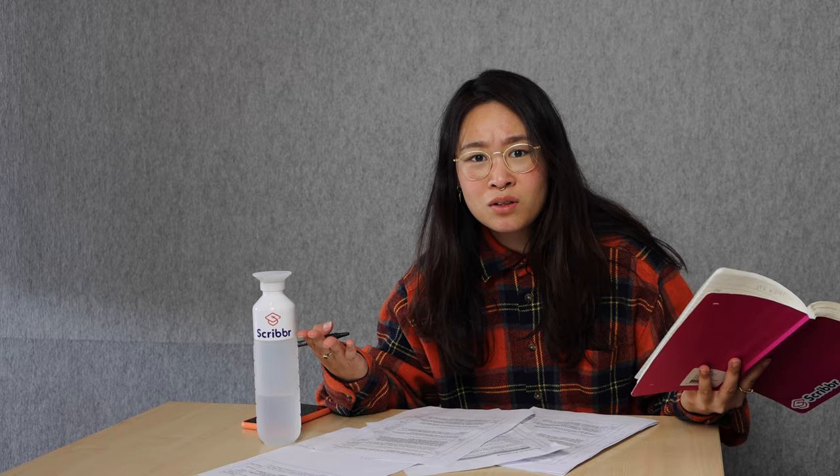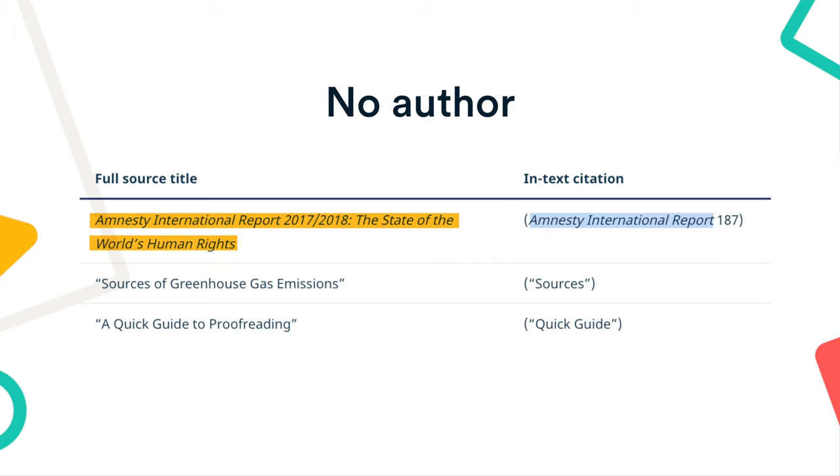If the author is unknown, the in-text citation must match the first element of the works cited entry. This may be the name of an organization or a shortened version of the title. If the title is longer than four words, shorten it to the first word or phrase.